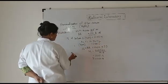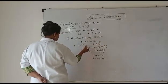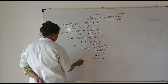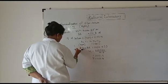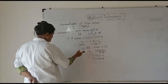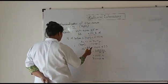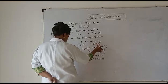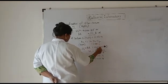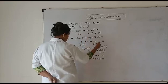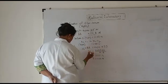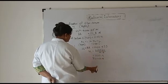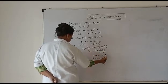Now we will find out the normality of silver nitrate by the formula N1V1 equals N2V2. N1, the normality of silver nitrate which we are estimating, times V1, the burette reading, equals 0.02, the normality of NaCl, times 25, the volume taken. So N1 equals 0.02 times 25 divided by the burette reading, that is 22.8.